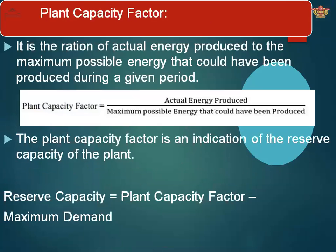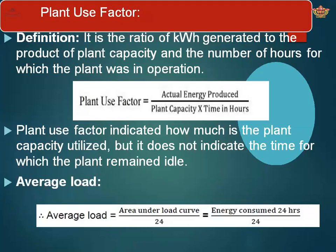Plant capacity factor is the ratio of actual energy produced to the maximum possible energy that could have been produced. It is an indication of the reserve capacity of the plant — not the maximum capacity, but the reserve capacity. Reserve capacity equals plant capacity factor minus maximum demand, showing the difference between what the plant can do and what is demanded. Plant use factor is the ratio of actual energy produced to plant capacity multiplied by time in hours.